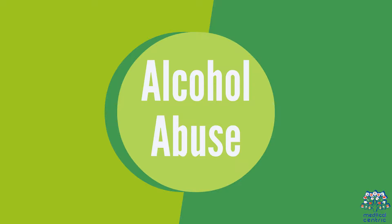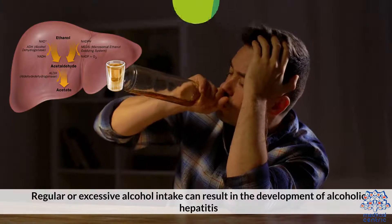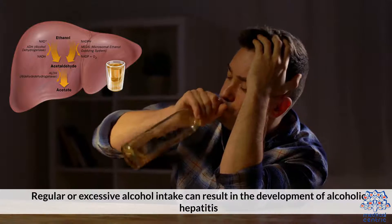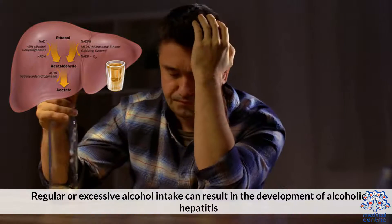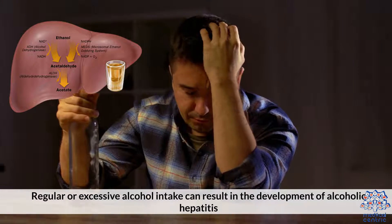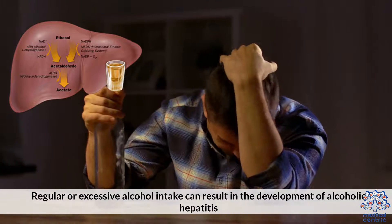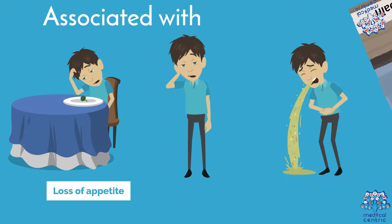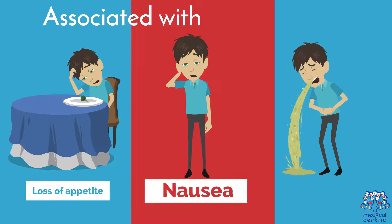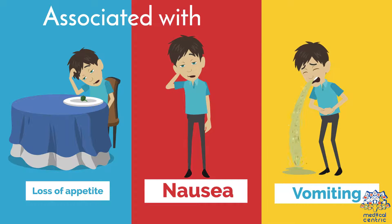Alcohol abuse: regular or excessive alcohol intake can result in the development of alcoholic hepatitis. Alcohol causes liver inflammation and leads to sharp abdominal pain associated with loss of appetite, nausea, and vomiting.